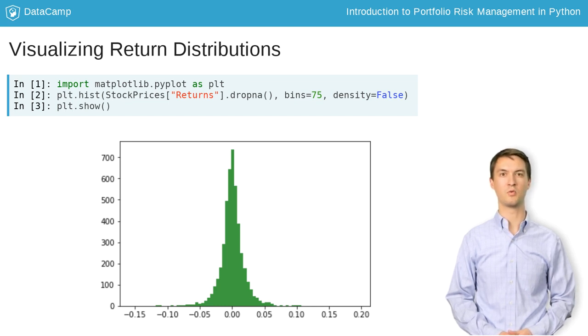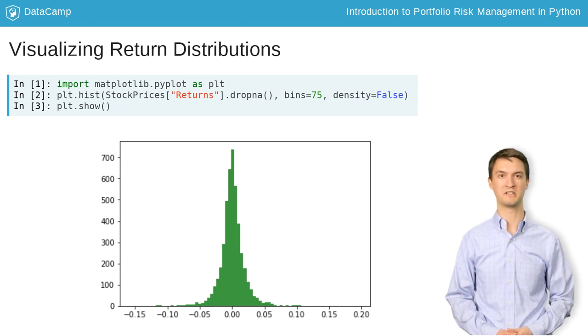Setting bins equal to a large number will spread out your plot, but a low number will cause a lack of resolution. If you set density equal to false, you will plot the frequency of returns rather than the probability density on the y-axis. Finally, call plt.show to display the plot.